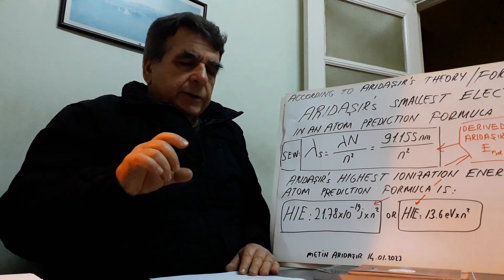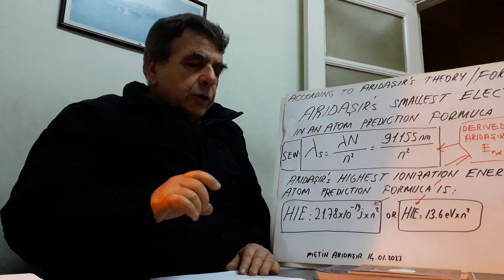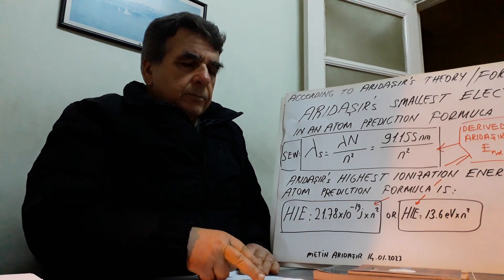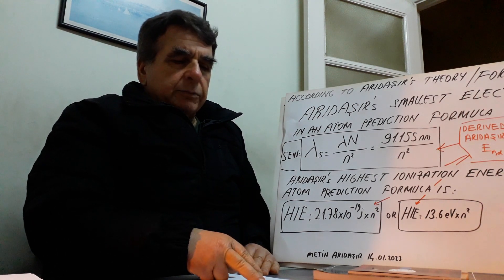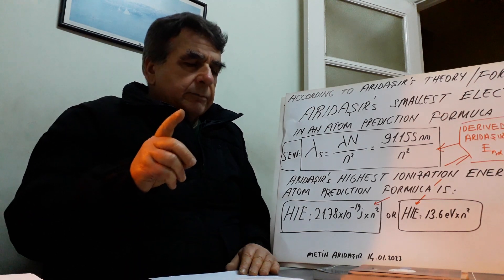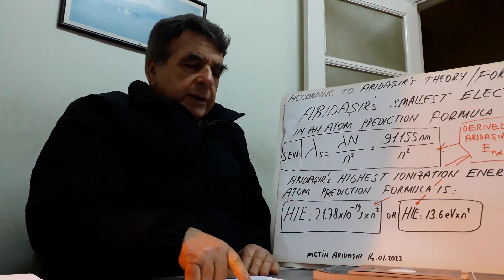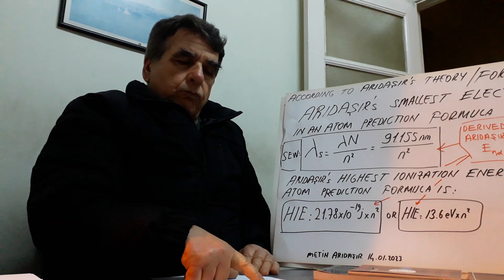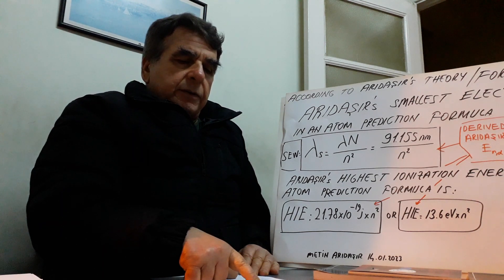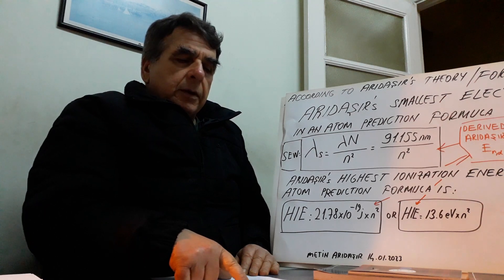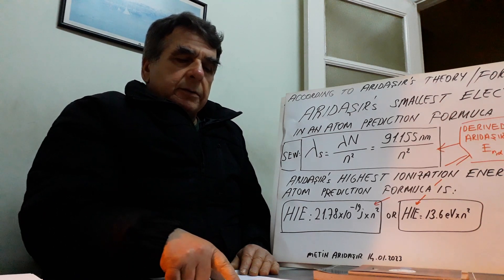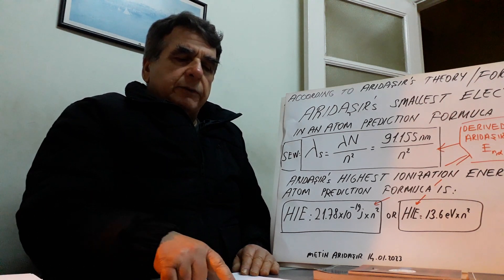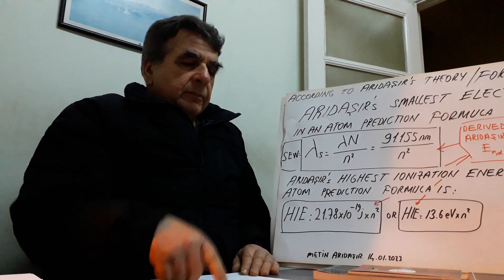For example, the smallest bound electron wavelength size will be Lambda normal divided by 2 squared, equal to 22.78 nanometers. The highest ionization energy of helium will be, according to my formulas, 87.18 × 10⁻¹⁸ joules, or 54.41 eV. All other electrons changed their 91.155 nanometer wavelength.